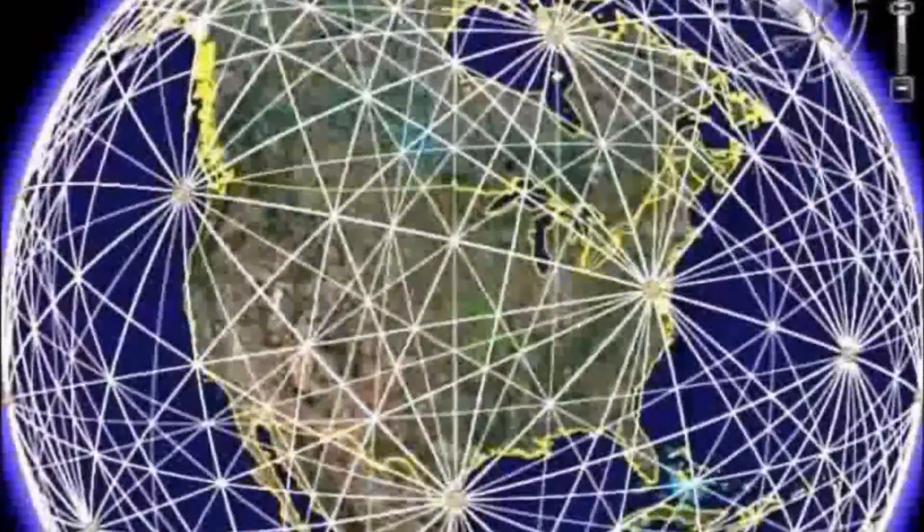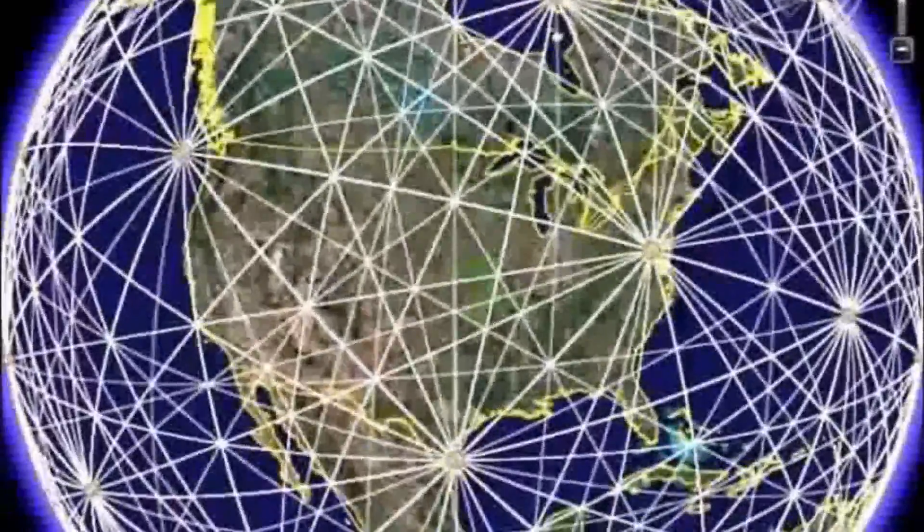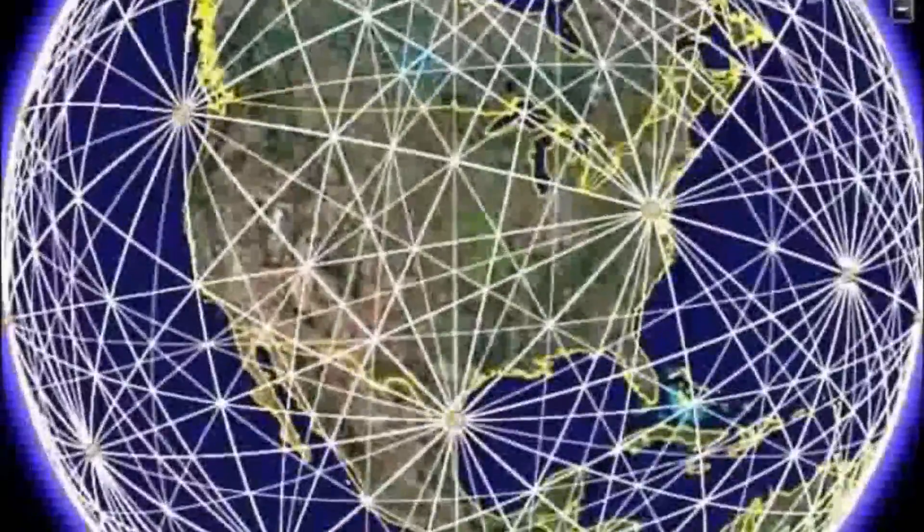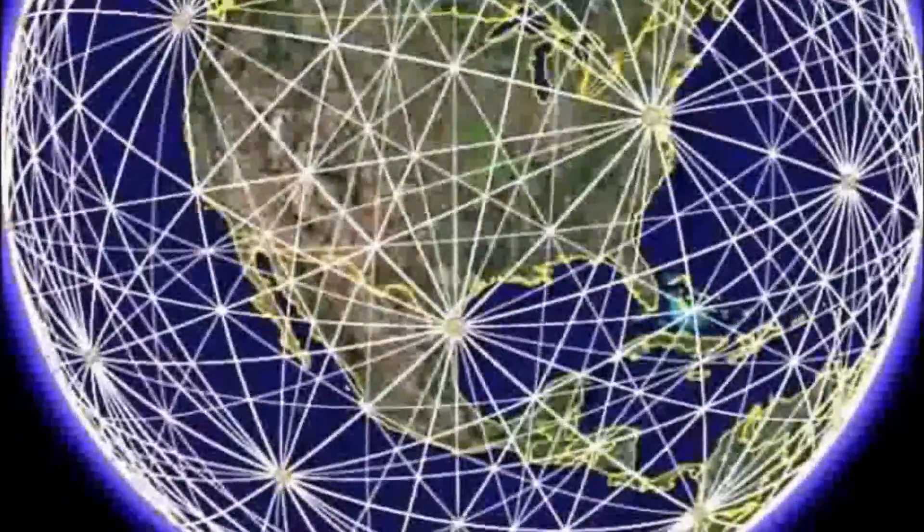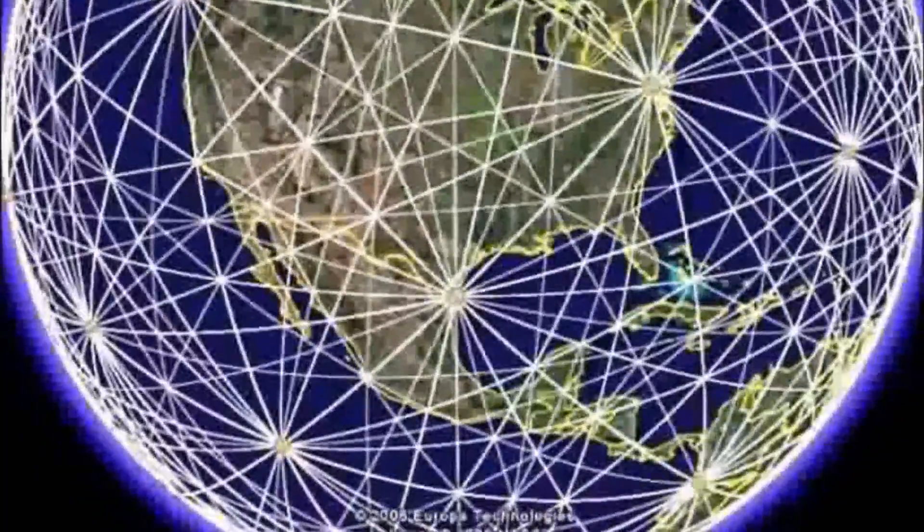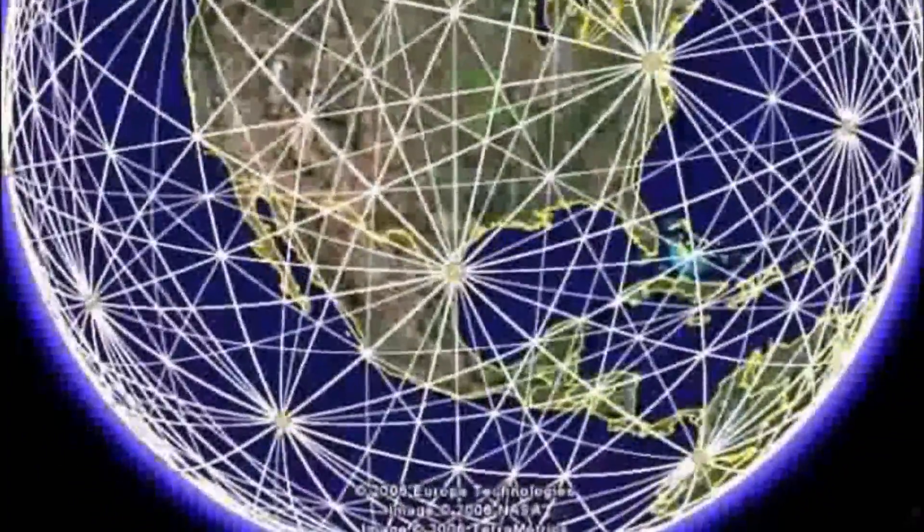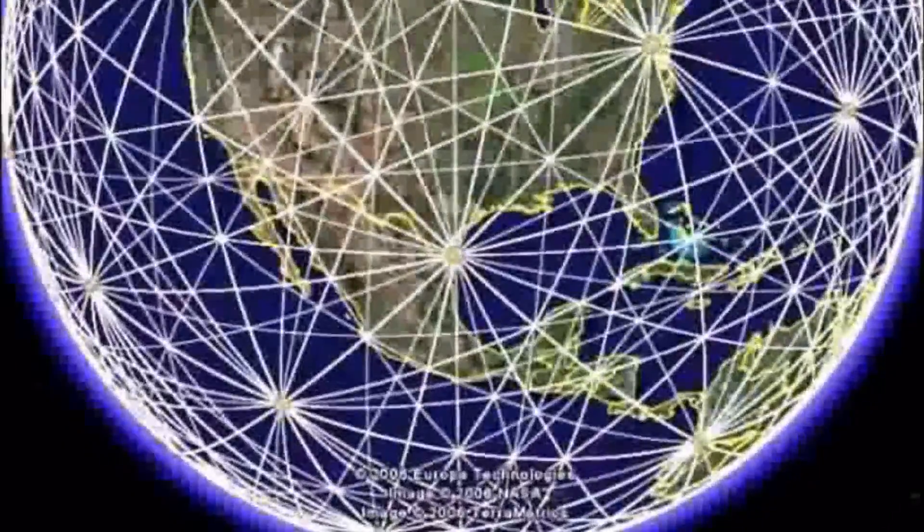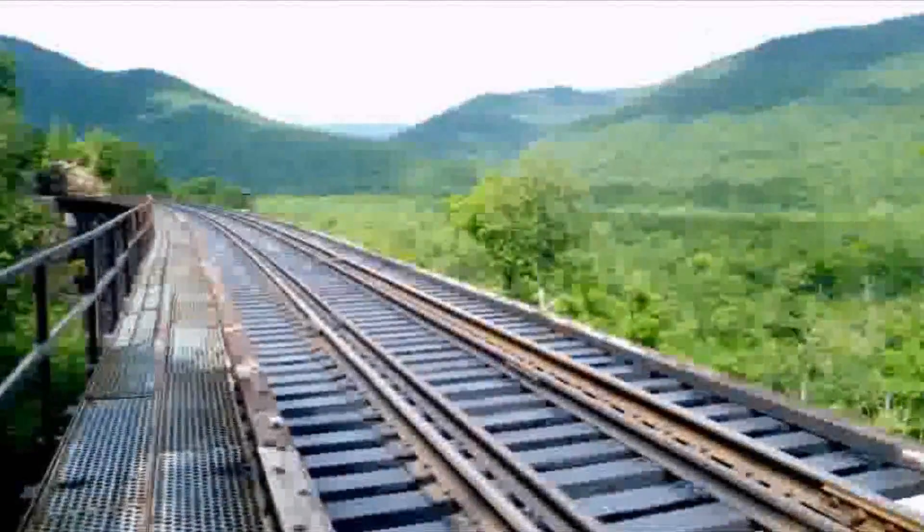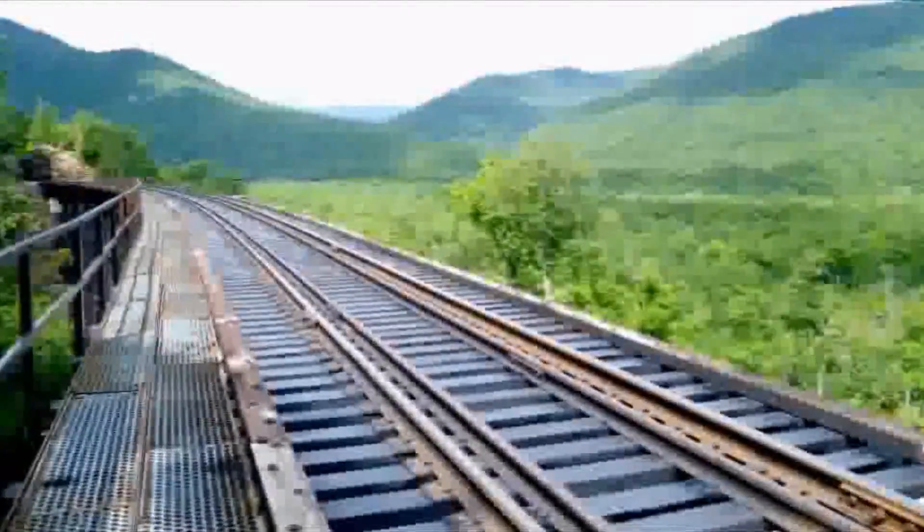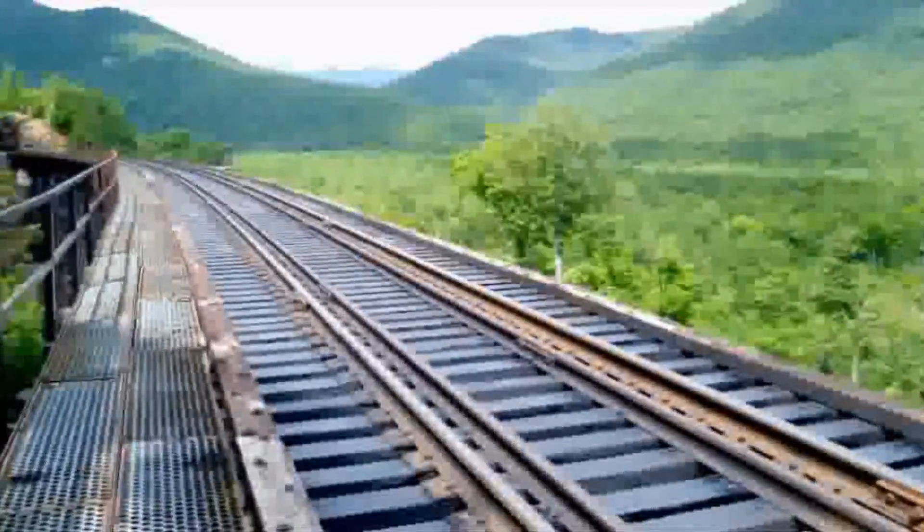Well, that energy that travels along those lines is orgone energy. And throughout the centuries, advanced societies have known this, and they have taken advantage of it. This is an ancient technology, this is suppressed technology. The same way that a subway system works on a railroad track, this is the way that the ley lines work. And if you understand orgone energy, you tap into it.